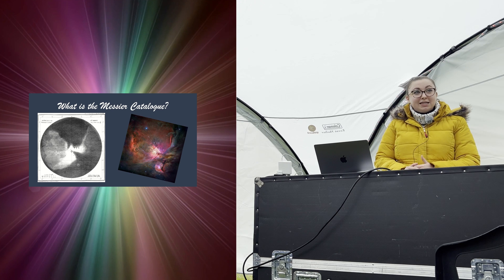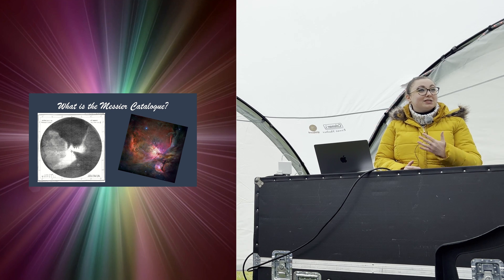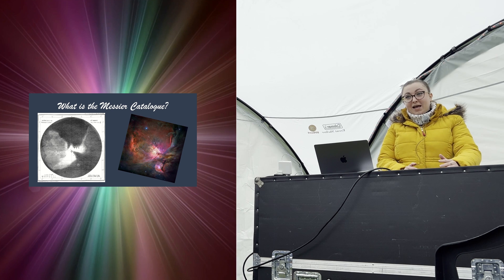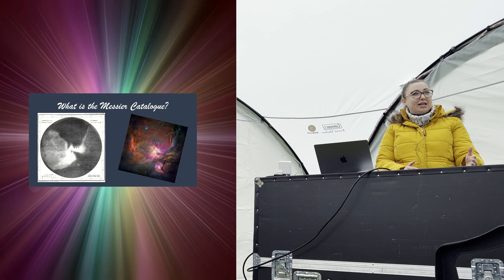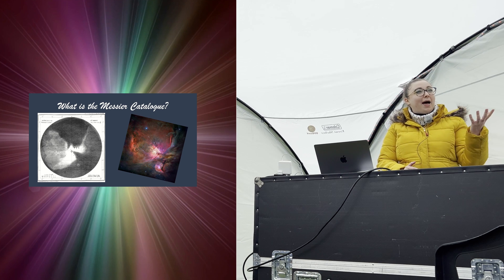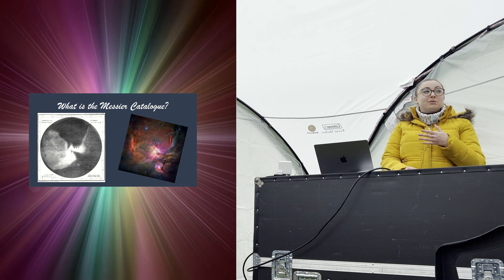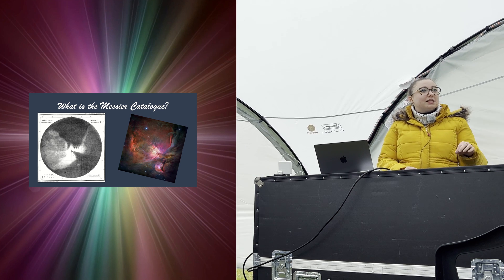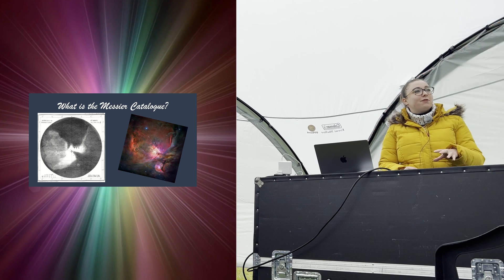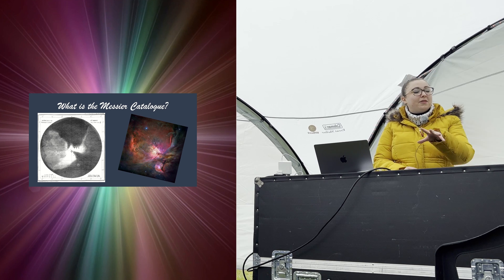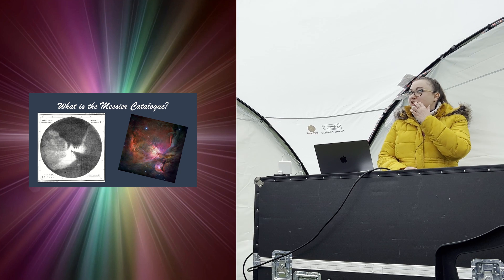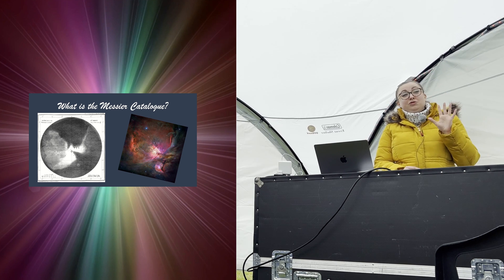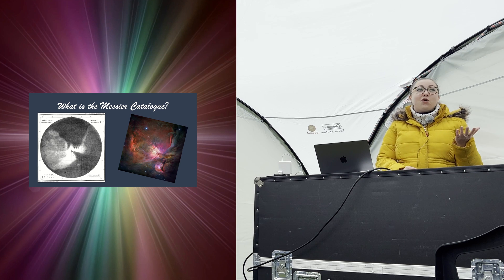But today's Messier Catalogue has 110 objects, and those final additional seven objects came from people beginning I think in the 30s and then going up to the 80s, looking back over Messier's notes and his assistant's notes and all of his correspondence. Where he's kind of noted that these actual objects existed, but he never found time to formally observe them and then publish them in scientific papers. So purists are like it's only 103, we should ditch the last seven.